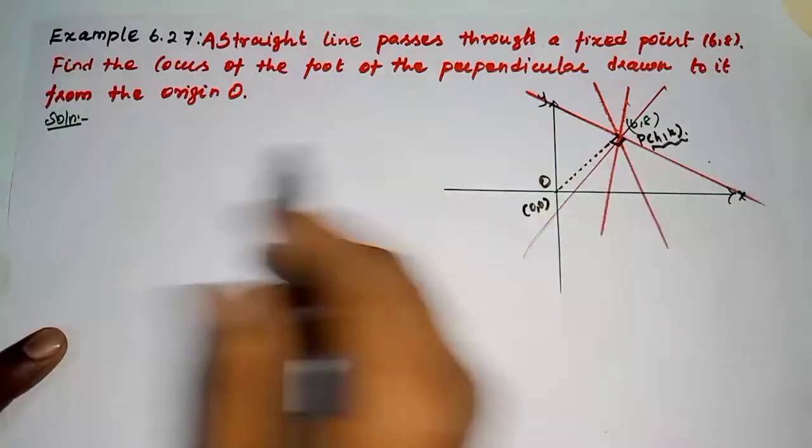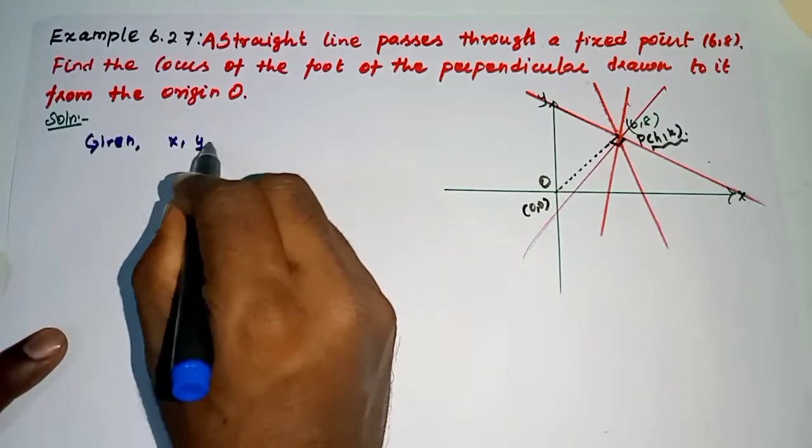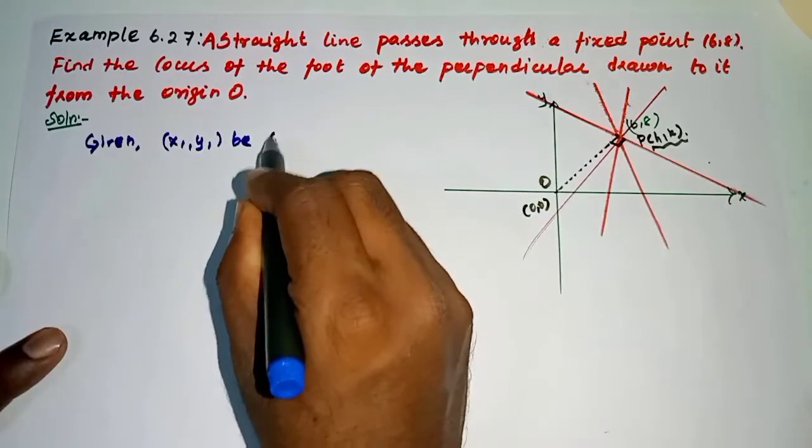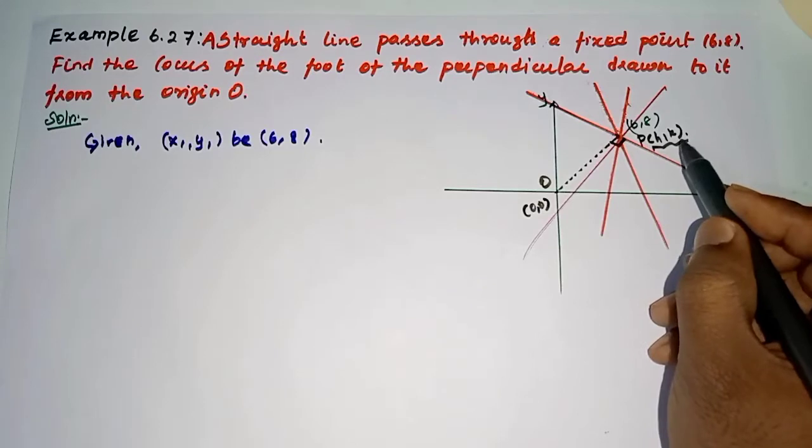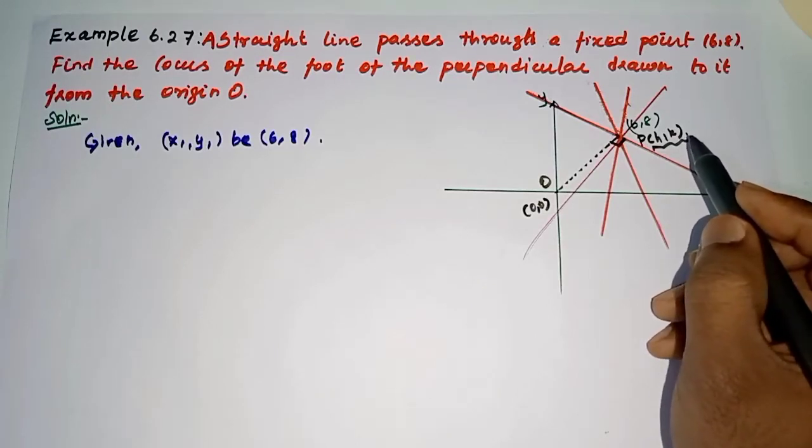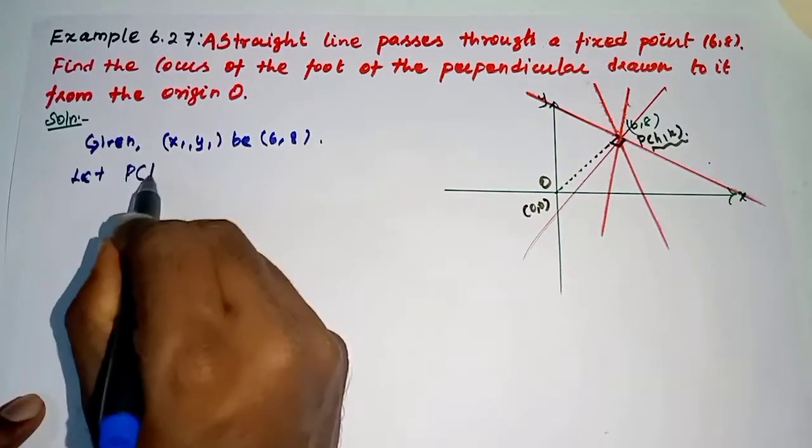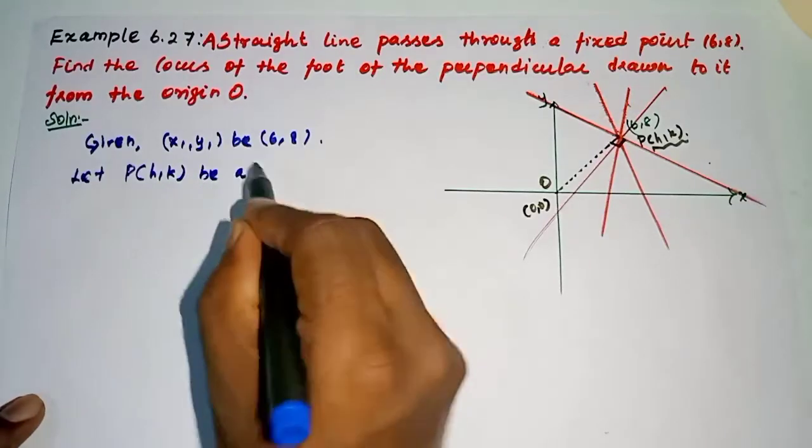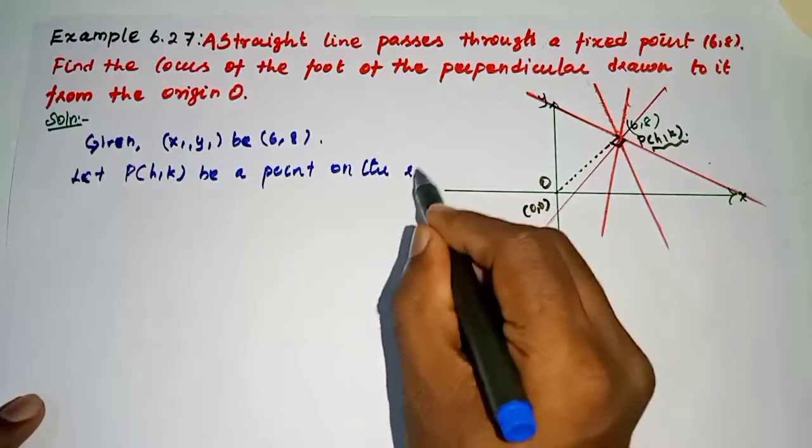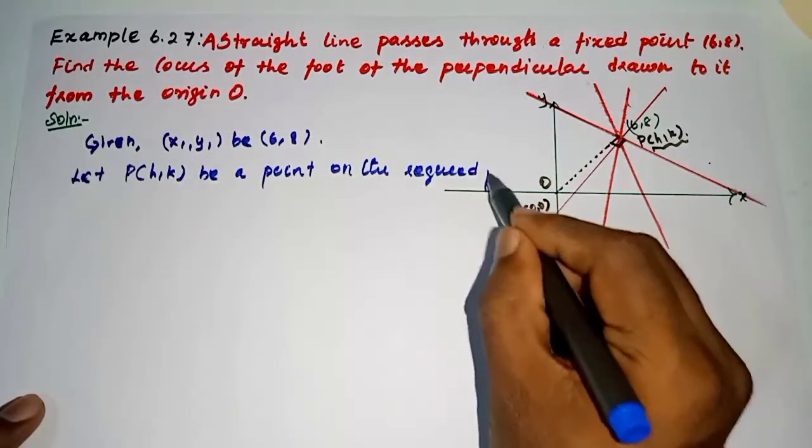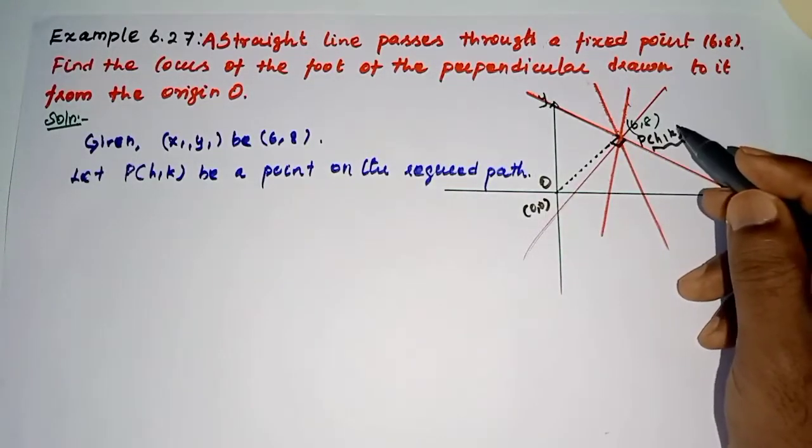First, given x₁, y₁ be (6,8). The path point is h,k. Let P(h,k) be a point on the required path. Okay, because h,k is moving, it is not a fixed point.